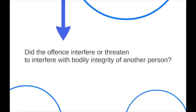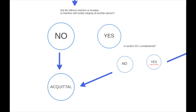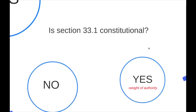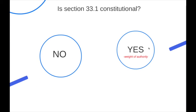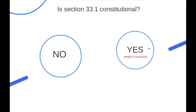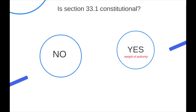Section 33.1 has expressly excluded any offenses that interfere with the bodily integrity of another person — so any offenses involving threats or harm to another person are out. If it did threaten or actually interfere with another person, you are guilty unless section 33.1 is unconstitutional. The weight of authority says it is constitutional, in which case intoxication is irrelevant to liability. If a court finds it unconstitutional, we revert to Daviault, which says extreme intoxication is a defense to any general intent offending and you would be entitled to an acquittal.